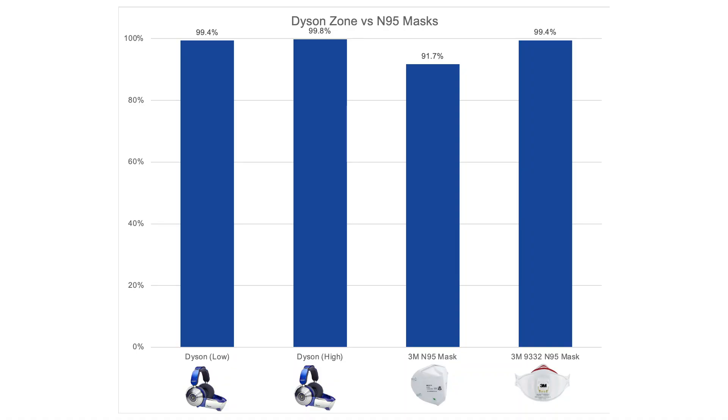So all in all what's the Dyson Zone headphone actually like? Well they work really well at filtering out PM 2.5. The H11, H12 filters in there can get 99.4 and 99.8 percent of particles in our tests which is really good but having said that that's just as good as an N95 mask that's fitted well.